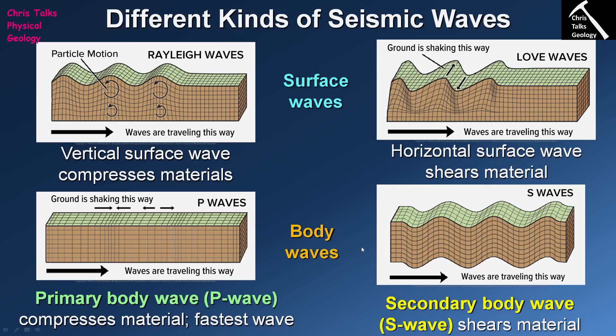These two waves have different properties that are most helpful to geologists. P waves have the capacity to move through solids, liquids, and even gases — not particularly effectively through gas, but they can. Their ability to move through solids and liquids is most important. S waves, on the other hand, can only move through solids — they cannot go through liquids or gases. This is a very important point to remember.